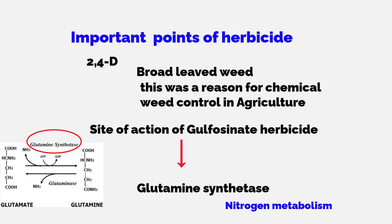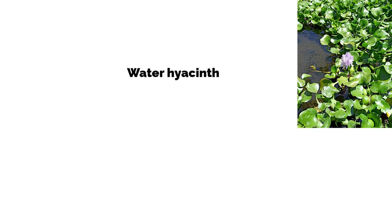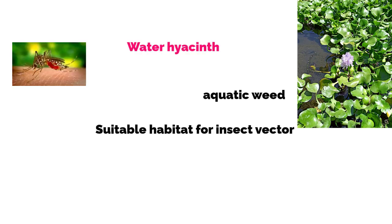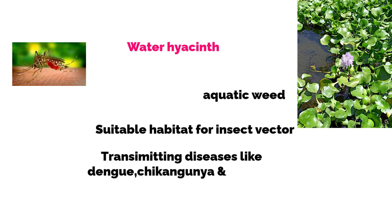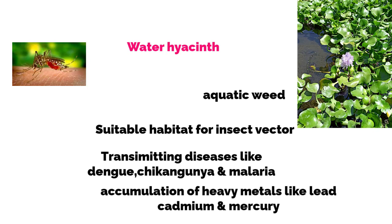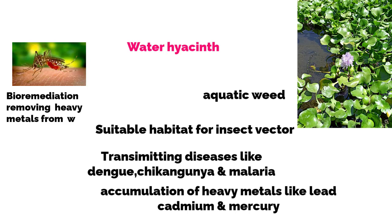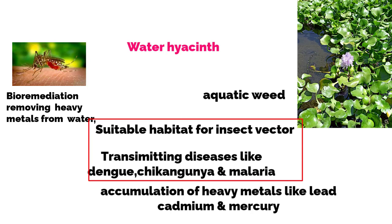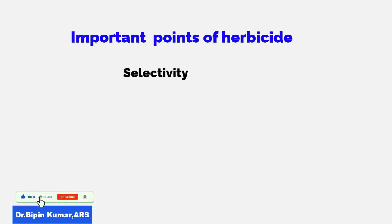Water hyacinth is one of the aquatic weeds and is a very suitable habitat for insect vectors that transmit diseases like dengue, chikungunya, and malaria. This aquatic weed has the advantage of accumulating heavy metals like lead, cadmium, and mercury, so it can be used for bioremediation of heavy metals from water bodies. However, it is a disadvantage that it shelters vectors responsible for dengue, chikungunya, and malaria. The selectivity of triazine is due to the glutathione S-transferase enzyme.